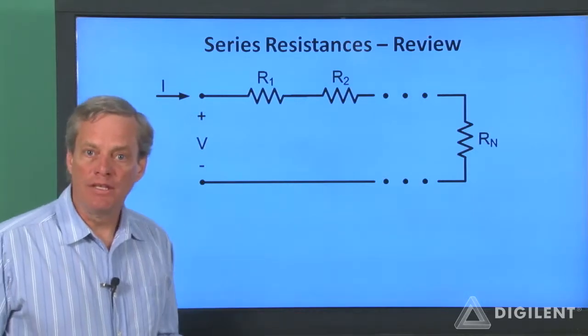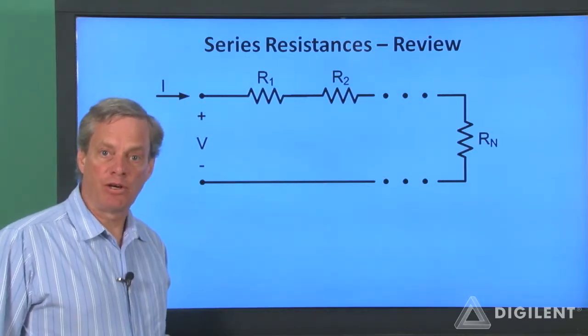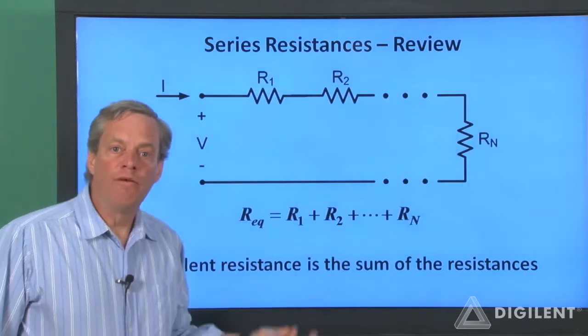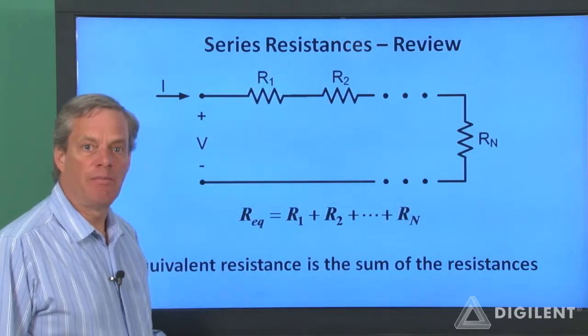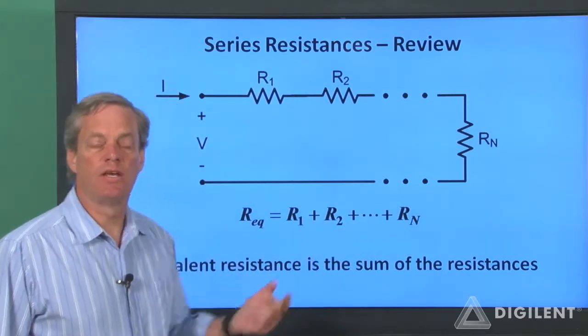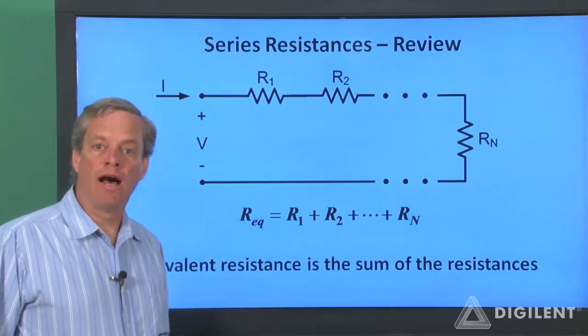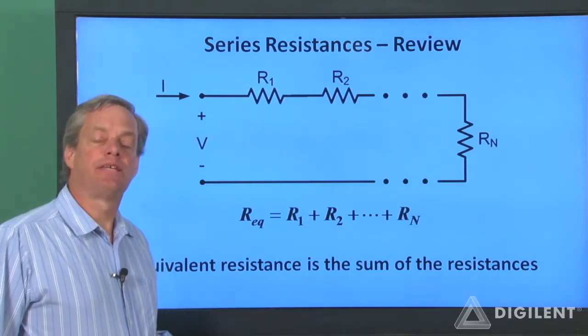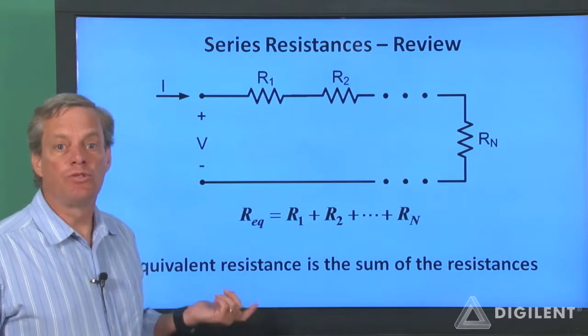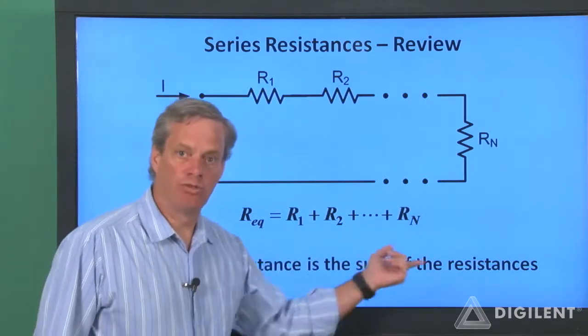The elements are all in series because they all have the same current. KCL applied at any point in the circuit can verify this. The equivalent resistance of the series combination is simply the sum of the individual resistances. In short, the overall combination of resistors has the same voltage current relationship as a single resistor whose resistance is the sum of the individual resistances.